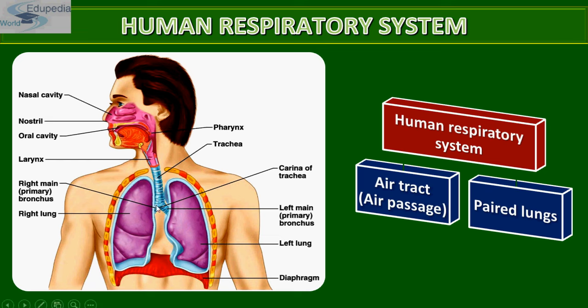These are the left and right bronchi. Each bronchus undergoes repeated divisions to form secondary and tertiary bronchi, and the bronchi ultimately end in very thin terminal bronchioles. These are our lungs — right lung and left lung — and the bronchi undergo repeated divisions to form secondary and tertiary bronchi, finally forming bronchioles.